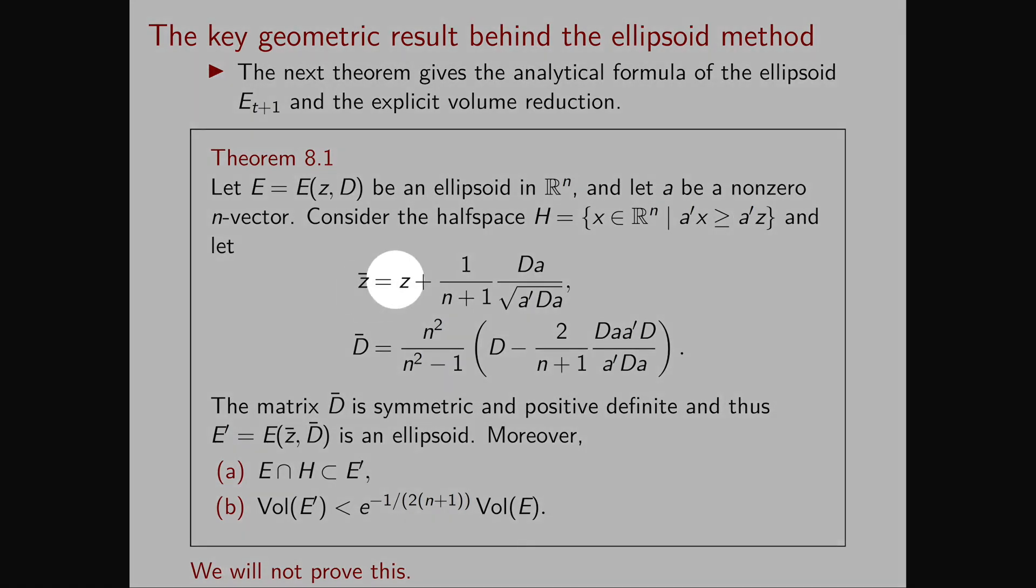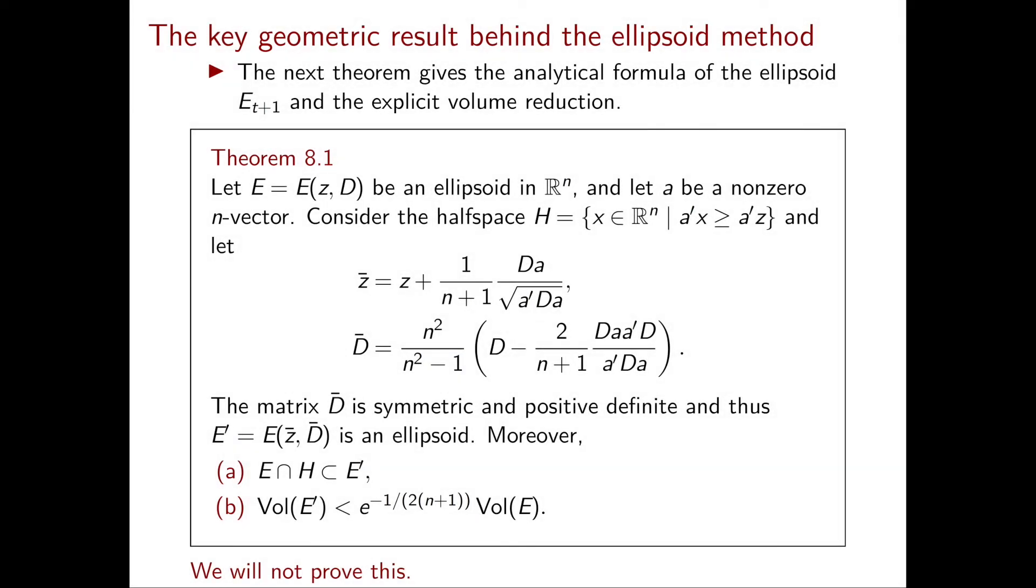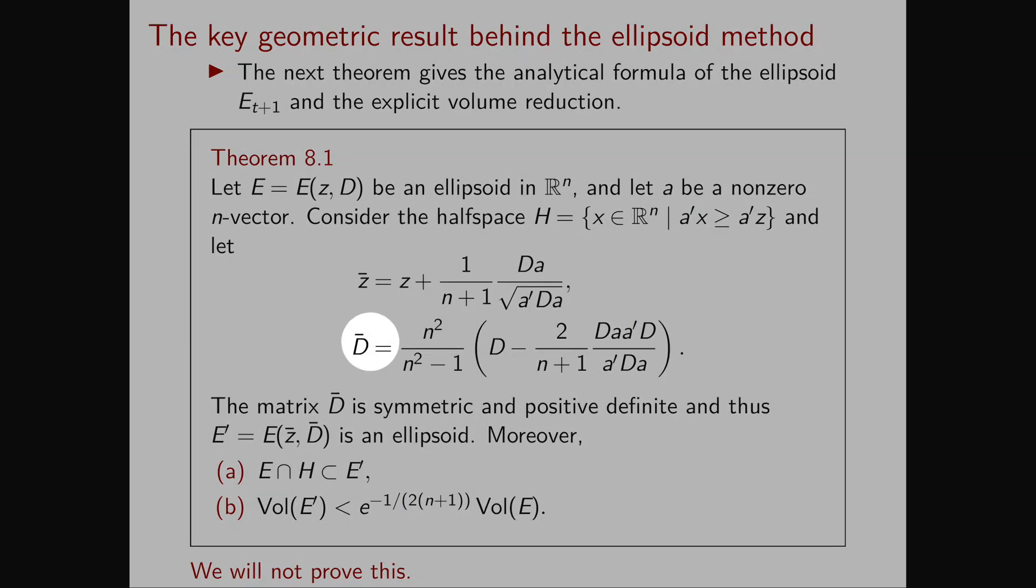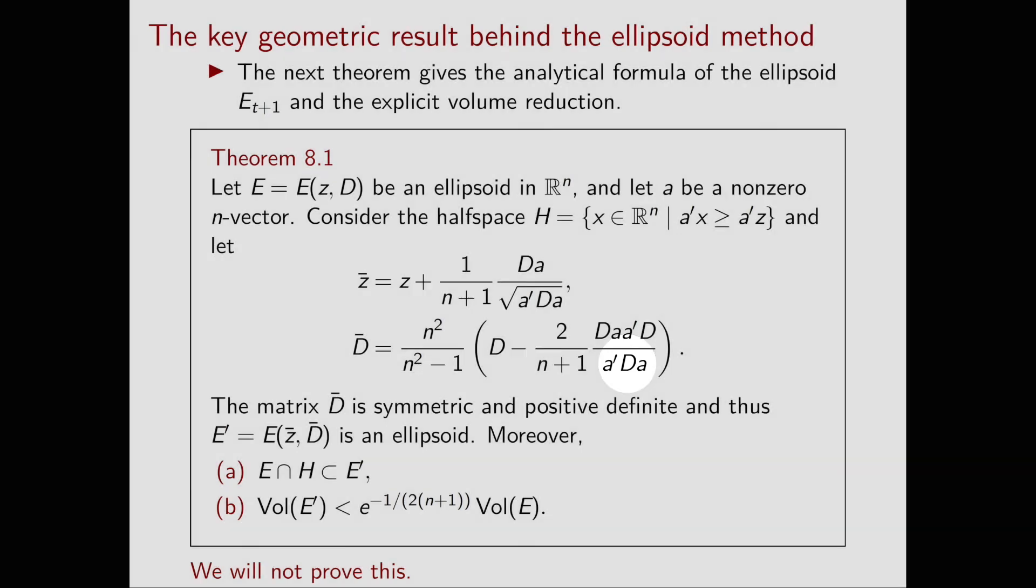Now let z bar be equal to z plus 1 over (n+1) times Da over the square root of a transpose Da and let D bar be equal to n^2 over (n^2 minus 1) times (D minus 2 over (n+1) times Daa transpose D divided by a transpose Da). Now the matrix D bar is symmetric and positive definite.